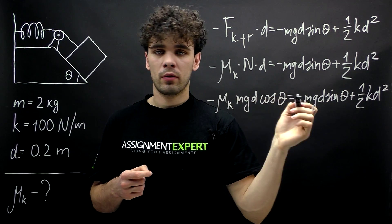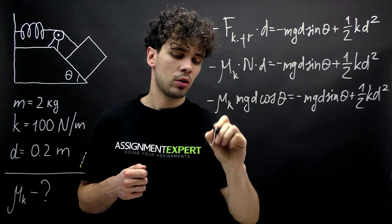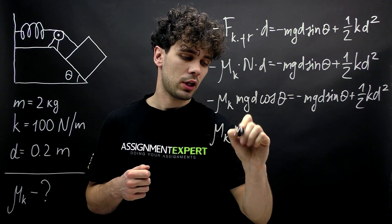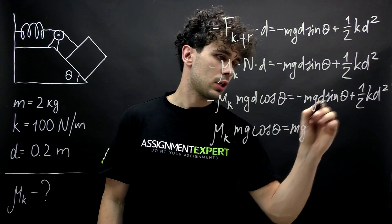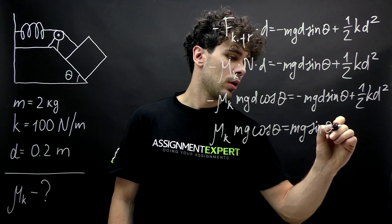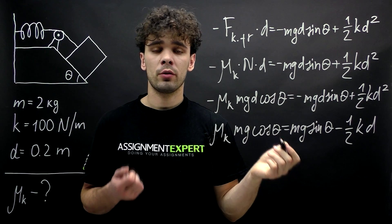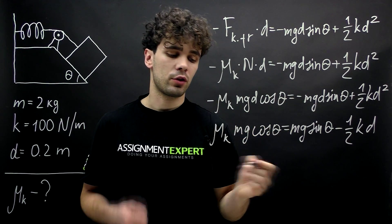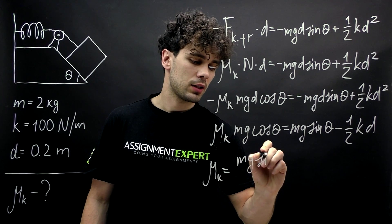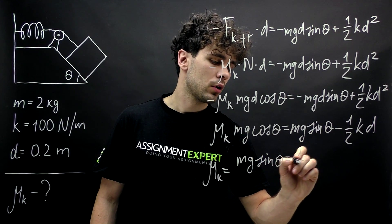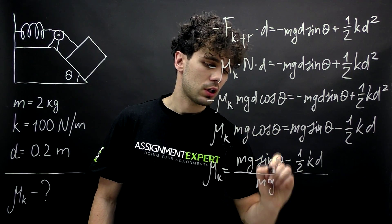Now we can change the sign to get rid of the negatives and divide all terms by d, so we get: mu_k times mg times cosine theta equals mg times sine theta minus one half times k times d. From here we can finally derive our coefficient of kinetic friction: mu_k equals (mg·sine theta minus one half·k·d) over (mg·cosine theta).